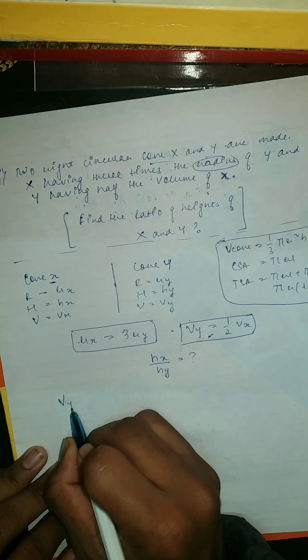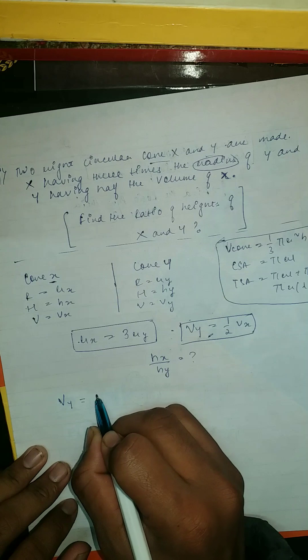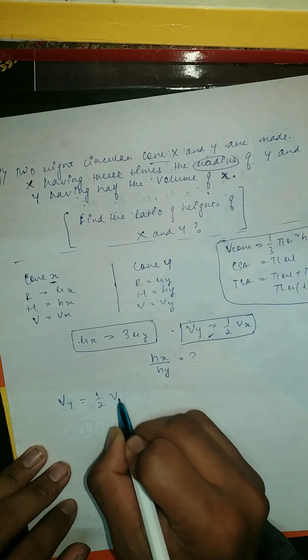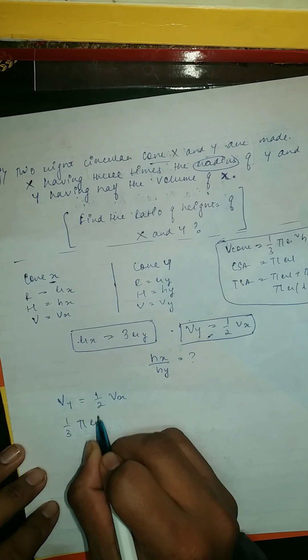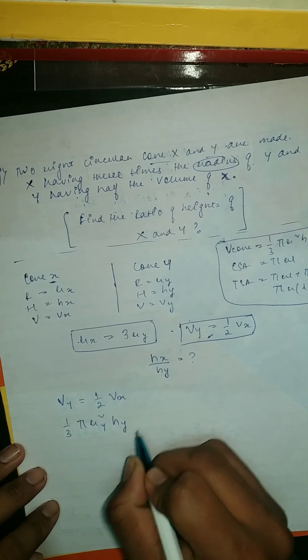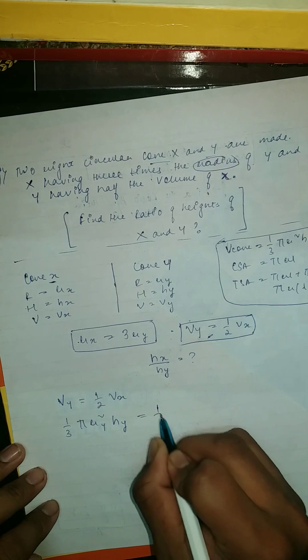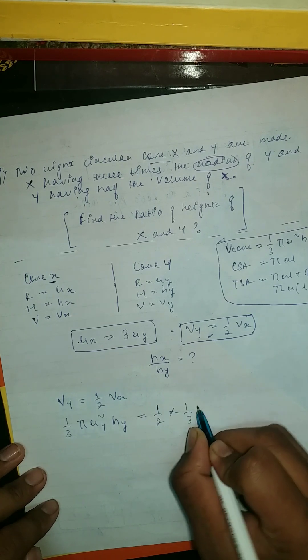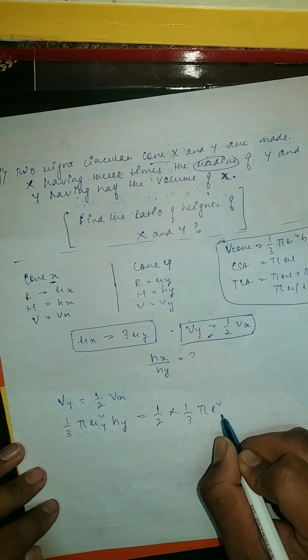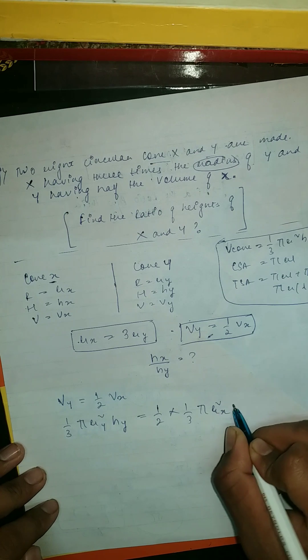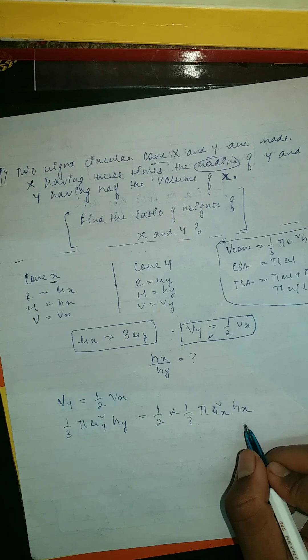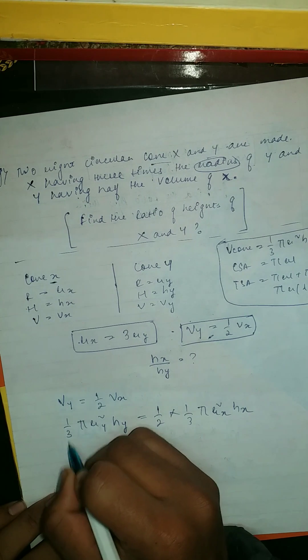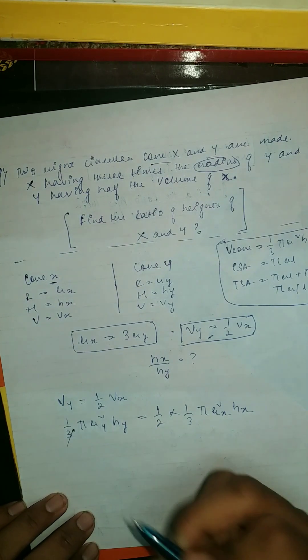Let's take this. Volume of cone Y equal to 1/2 volume of X. So 1/3 π ry² hy equal to 1/2 × 1/3 π rx² hx. Then here simply we're gonna cancel them out - 3 and pi cancel out.